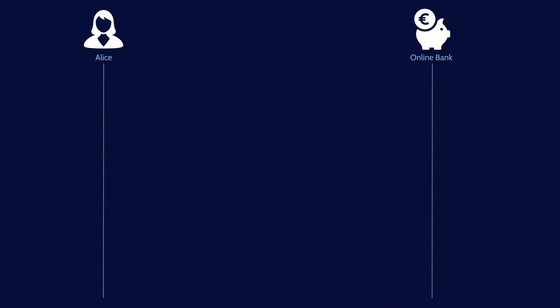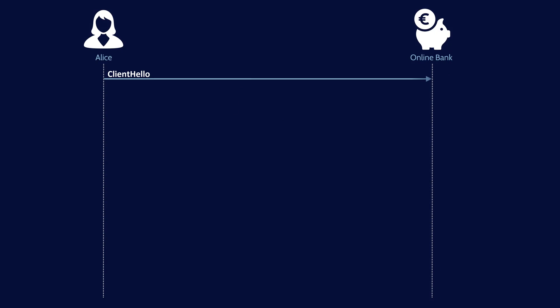Let's begin by understanding the problem that digital certificates address. We'll look at an example of Alice accessing her online banking. In order to secure communications between her browser and the server, she'll use a protocol like TLS, which will encrypt the data in motion. The first step in establishing a secure TLS session is Alice's browser sending a client hello message to the server.